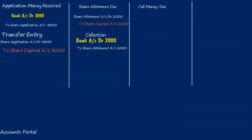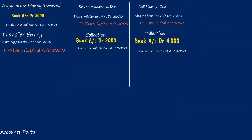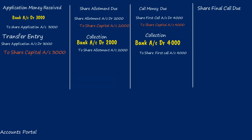Share First Call due entry: Share First Call account Dr. — number of shares allotted × first call money per share = 1,000 × 4 = rupees 4,000. Share First Call account Dr. 4,000 to Share Capital account 4,000. Share First Call money received: Bank account Dr. 4,000 to Share First Call account 4,000.